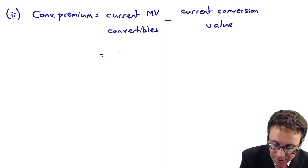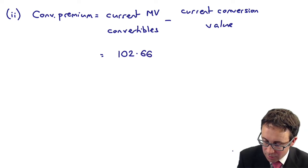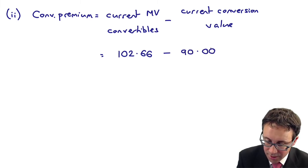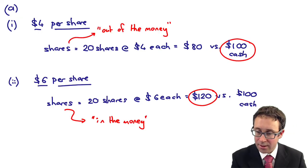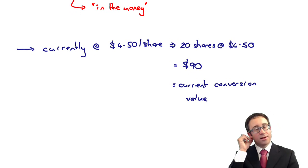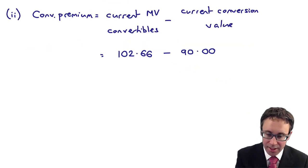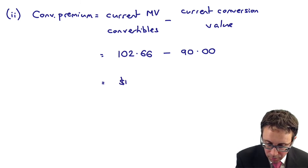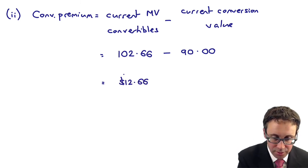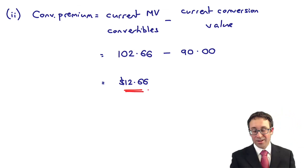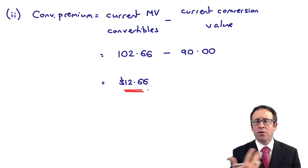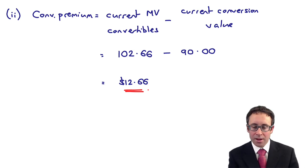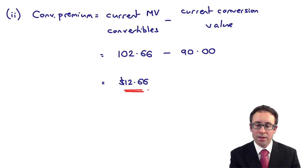So the current market value is 102.66, less your current conversion value is 90. So remember we did that in part A. What you would get currently is $4.50 per share. So does that mean that you would get $12.66? That's the premium. Because again, you can convert at any point in time. You don't have to wait until the end. If you wait till the end, you might just take the cash. You can't take the cash beforehand. You can take the shares at any point in time.